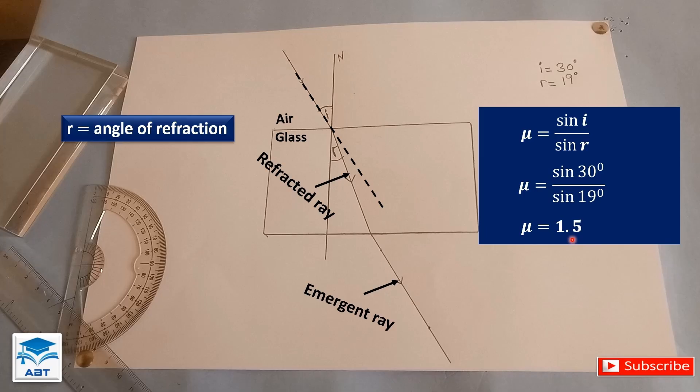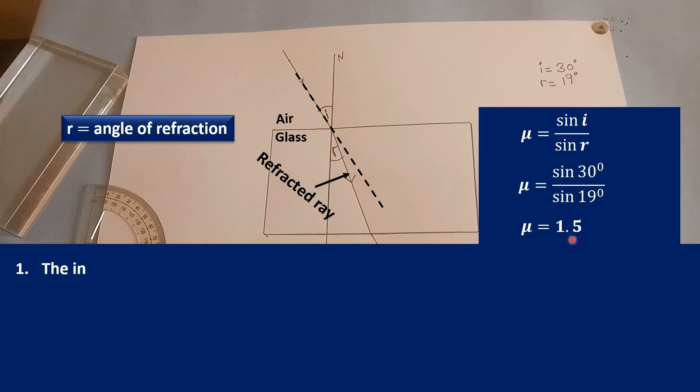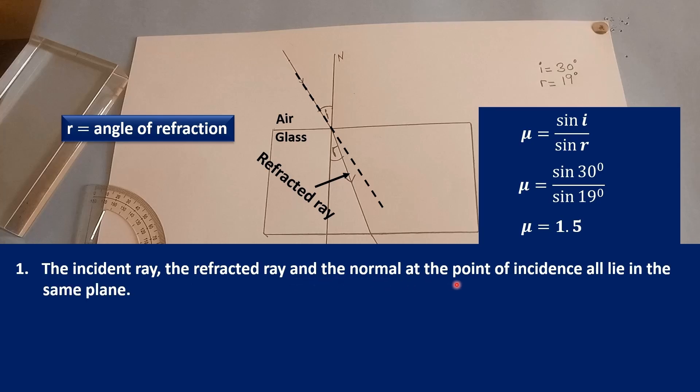And this brings us to the laws of refraction. The first one states that the incident ray, the refracted ray and the normal at the point of incidence all lie in the same plane.